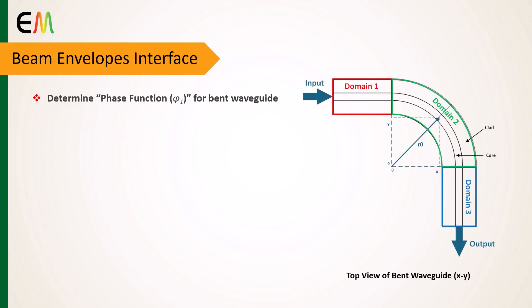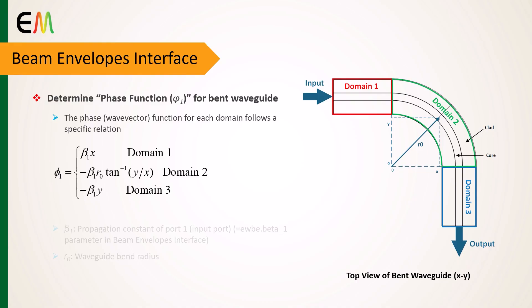As shown in this figure, the propagated wave in each domain of the waveguide experiences a specific phase change. Therefore, the phase function can be expressed by this equation, where r0 is the waveguide bend radius and beta1 is the propagation constant of the input port.